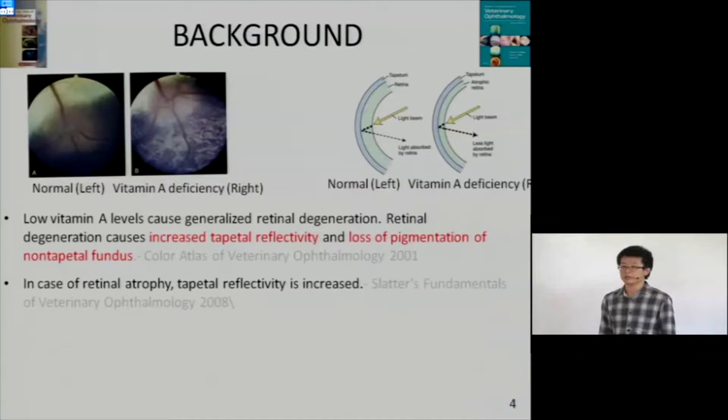Another literature shows that vitamin deficiency can cause retinal atrophy. This part is the tapetum, and on the tapetum is the retinal layer. When retinal atrophy happens, this layer becomes thinner. So less light can be absorbed by the retina, which means the reflectivity will get higher.